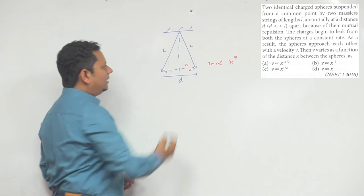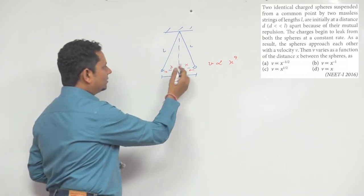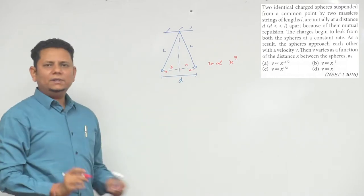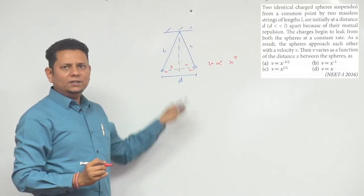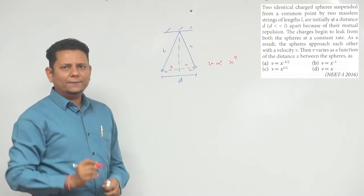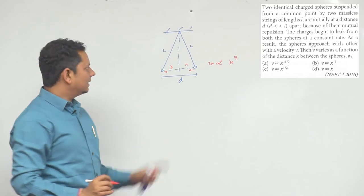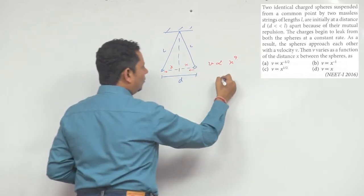Again we can assume this is small. The condition given is that your d is very small compared to length, so the initial distance x will also be very small. All right. What we're given is that dq by dt is constant.